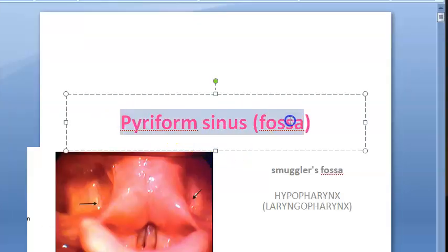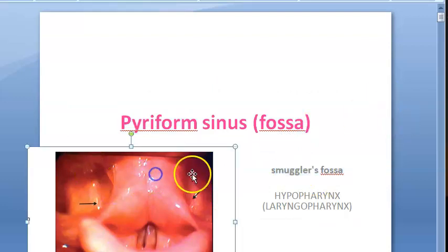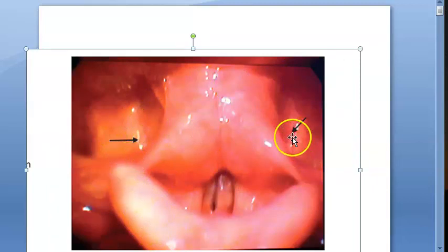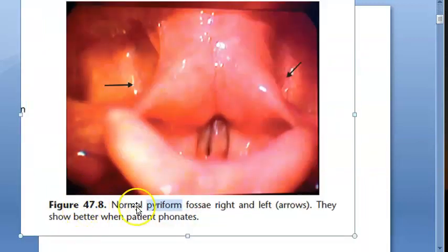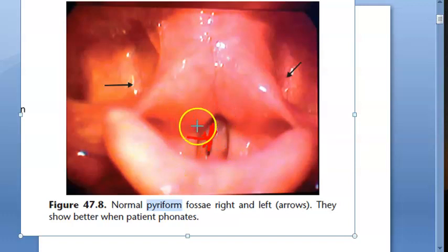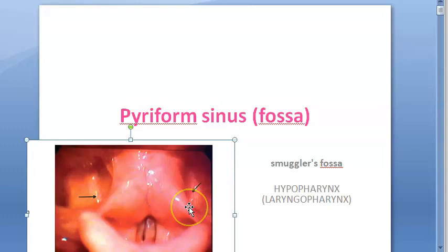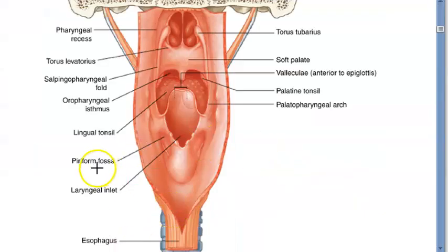In this video, let us look at pyriform sinus or pyriform fossa. It can be called either pyriform sinus or pyriform fossa, and it is also called the smuggler's fossa. This is a part of your hypopharynx, which is also called laryngopharynx. Here you can see the normal pyriform fossa — right and left. When the patient phonates, you can see it better.